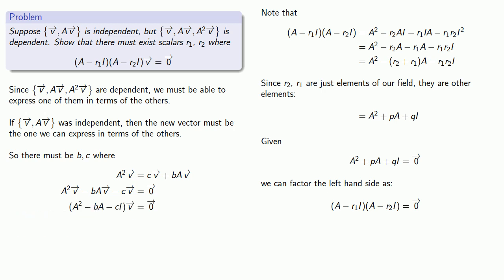But now I have this expression. And given some expression like A² + pA + qI, I can factor it as (A - r1I)(A - r2I) for some scalars r1 and r2. And so we can factor our matrix expression, which is what we wanted to show.